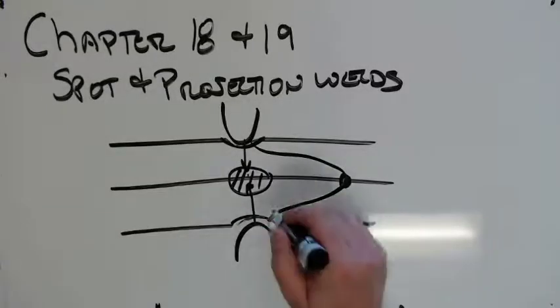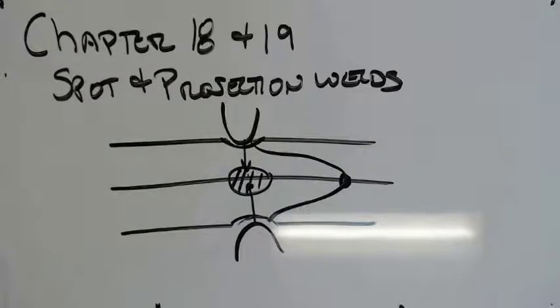And this area, that actual weld, is called a weld nugget. That's one of my least favorite terms in the world, I don't know why. I just hate saying weld nugget. So I say it a lot, but that weld nugget is circular in cross section.